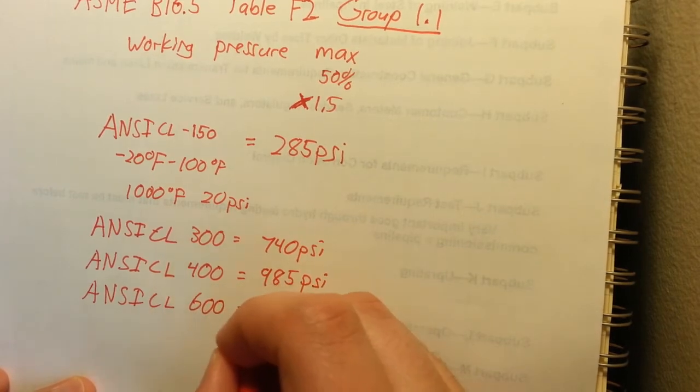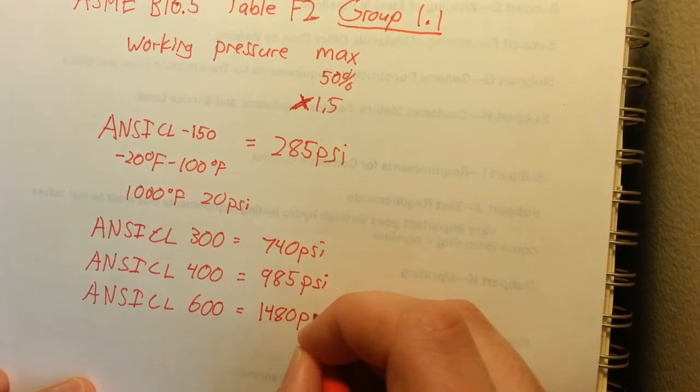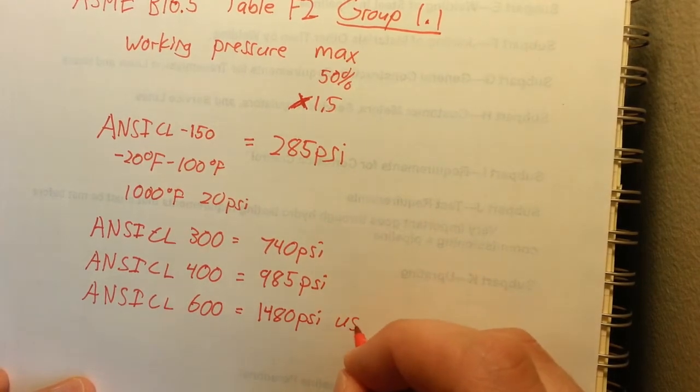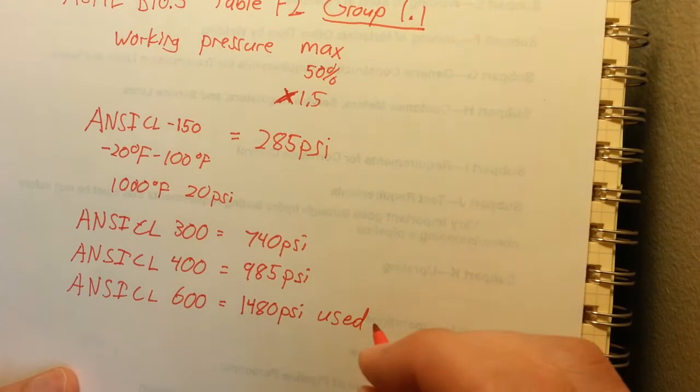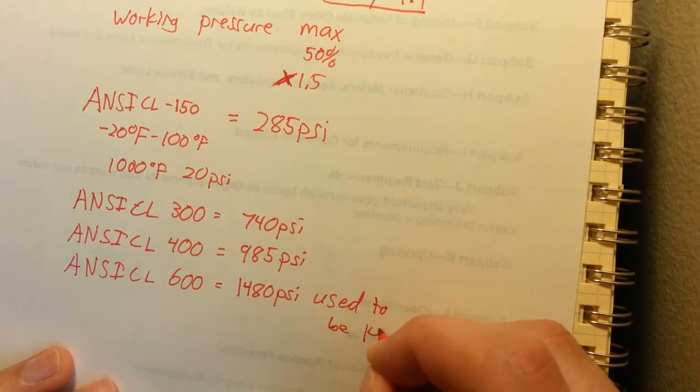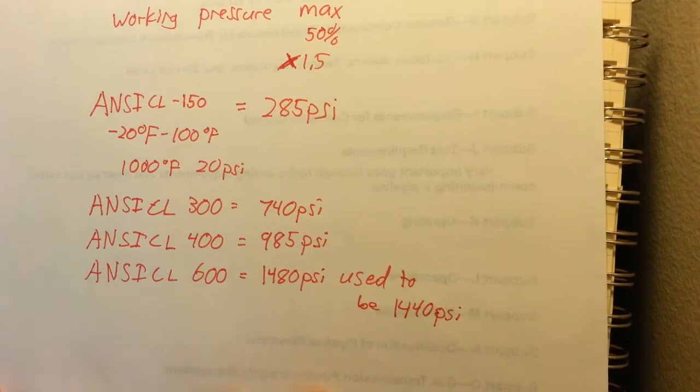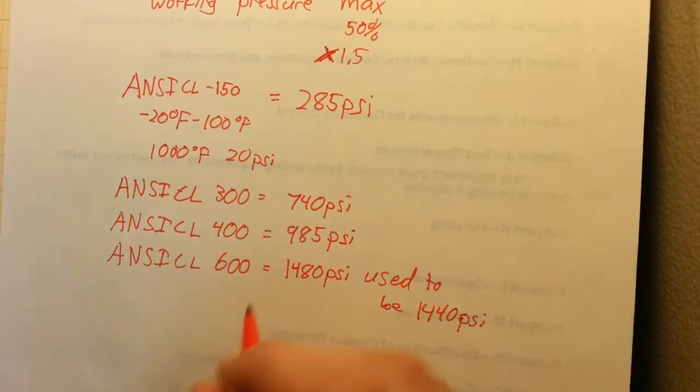ANSI class 600 is the next one. That working pressure is 1480 PSI. ANSI class 600 I believe used to be 1440. I think in the last few years they bumped it up to 1480.